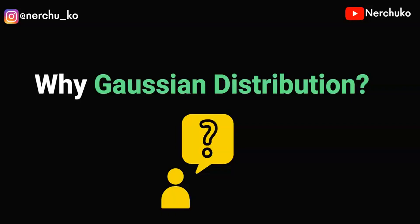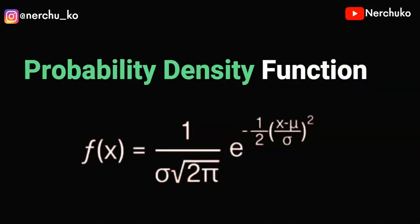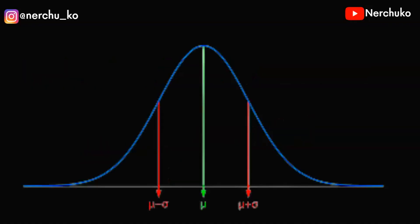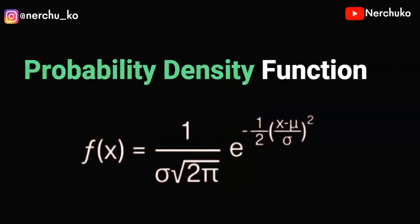Gaussian distribution is called the probability density function. This function is used to represent Gaussian distribution. The probability density function is: f(x) equals 1 over root(2π) times sigma, times e to the power of minus one-half times ((x minus mu) over sigma) squared. Here mu means mean and sigma means standard deviation, which we discussed in the previous video.